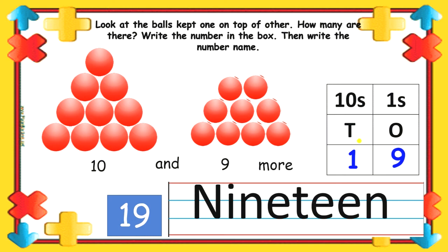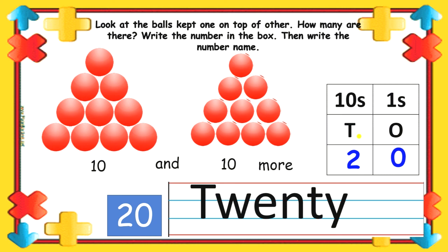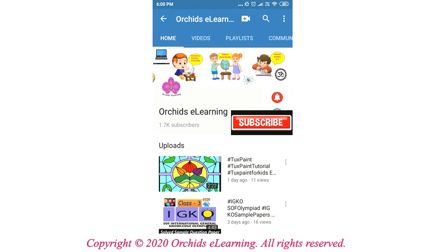And the last one is 10 and 10 more which is 20. In 20, we need to write 0 at 1's place and 2 at 10's place. And the number name for 20 is T-W-E-N-T-Y.